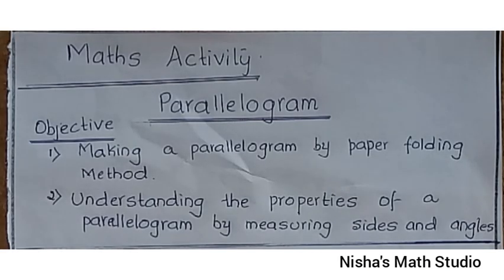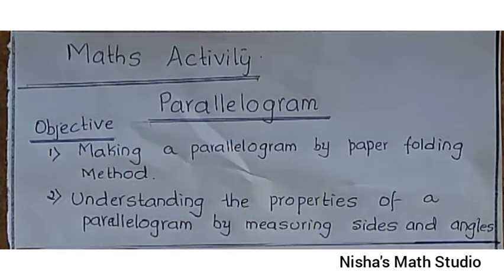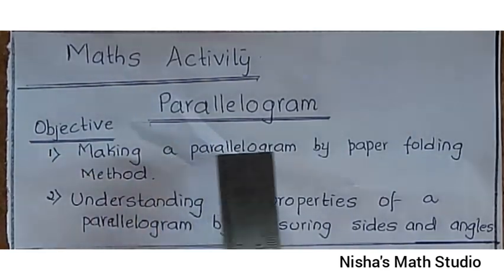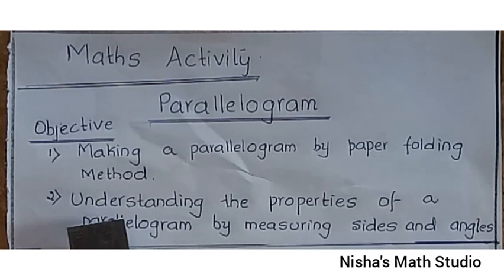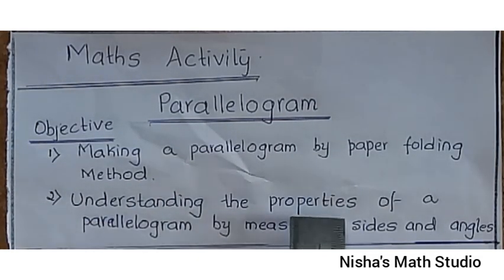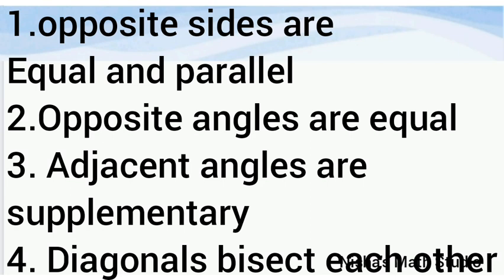Let's begin the activity. The objective of this activity on parallelogram is that we are going to make a parallelogram by paper folding method. Second, we are trying to understand the properties of the parallelogram by measuring the sides and angles. We will prove that in a parallelogram, opposite sides are equal and parallel, opposite angles are equal, adjacent angles are supplementary and diagonals bisect each other.